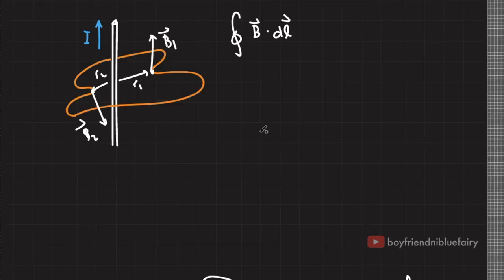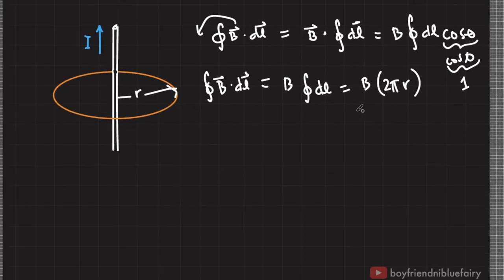So if I plug this here, so I'll have μ₀I over 2πr times 2πr. So the integral of B dotted to dL is equal to μ₀I. And this I current is obviously enclosed by this integration path. So the only relevant current in this calculation is the enclosed current by our integration path. So this must have a subscript of enclosed.